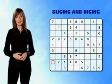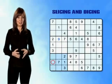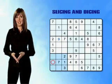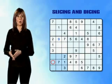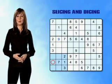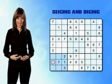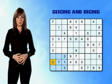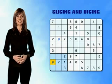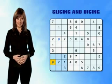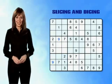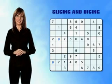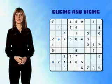We know that the bottom-left mini-grid must contain a 9, as each mini-grid has to contain one of each number. So we can go ahead and place a number 9 in the one empty box we have left — the empty box in column 1. So far, we've managed to place two number 9s simply by slicing through the rows.